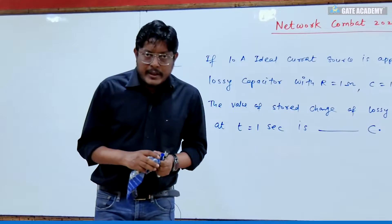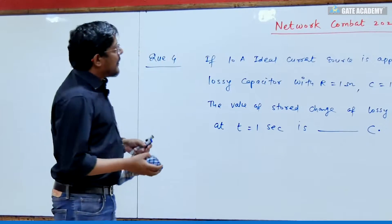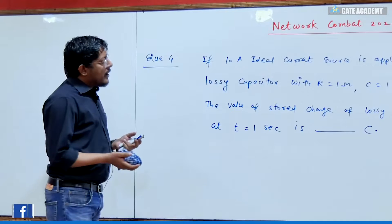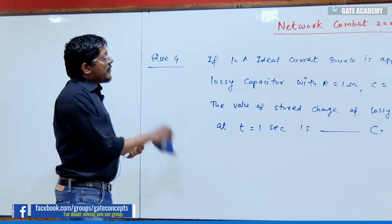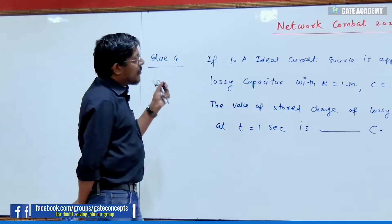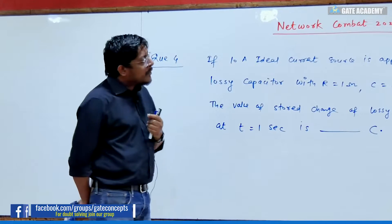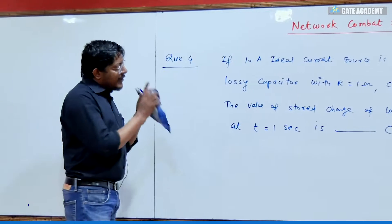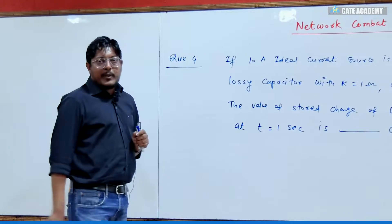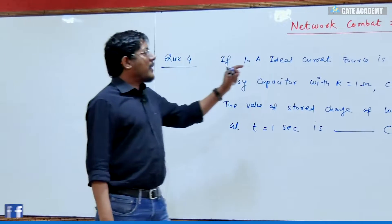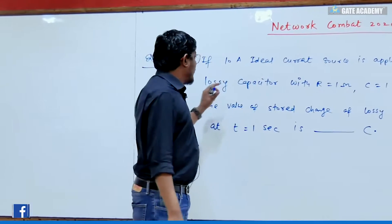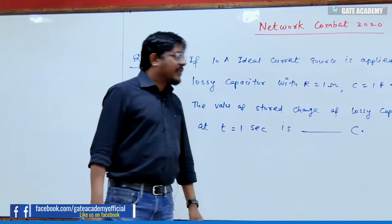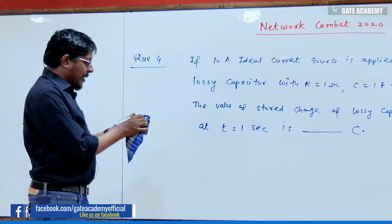Hello everyone, welcome to Gate Me. This is network combat question number 4. I am providing you the solution. If a 10 Ampere ideal current source is applied across the lossy capacitor with R equal to 1 Ohm and C equal to 1 Farad.